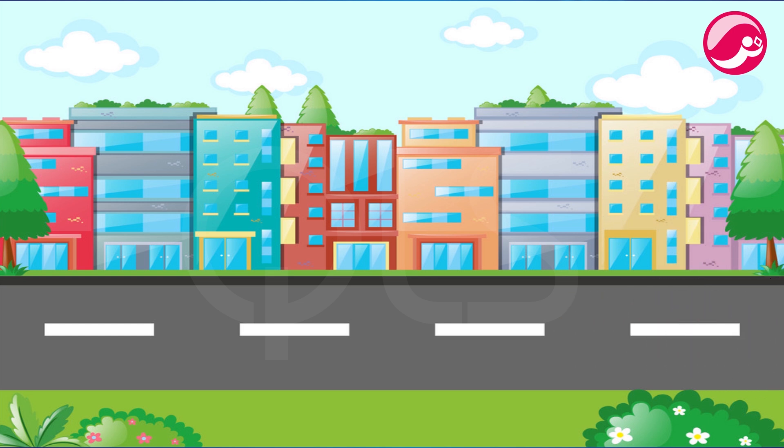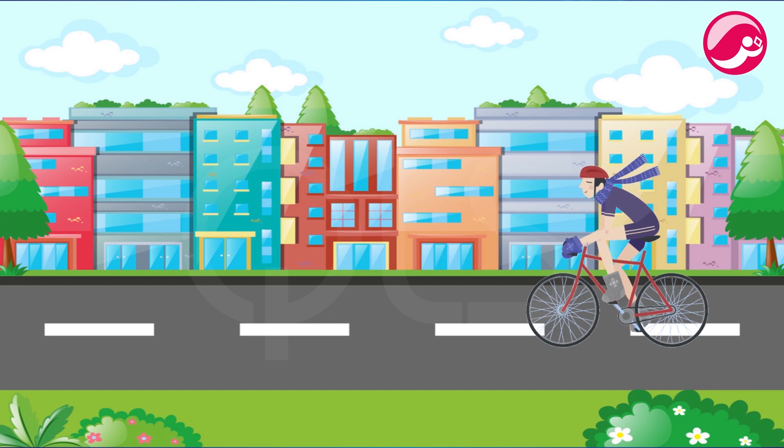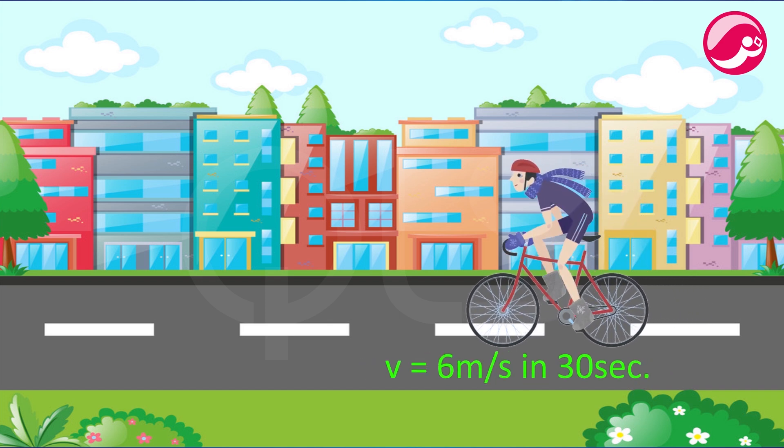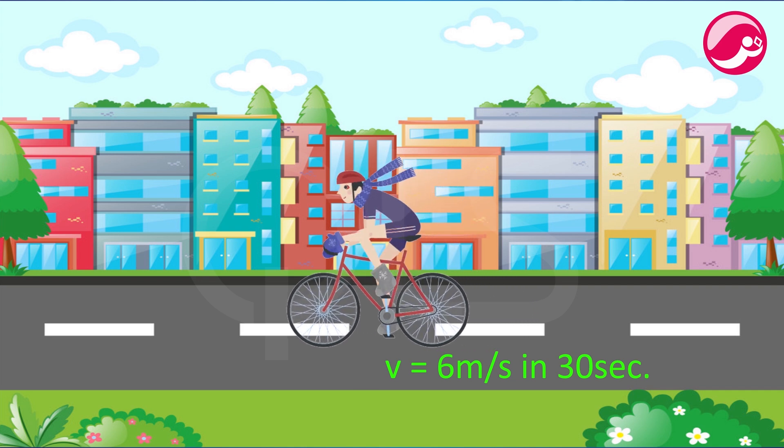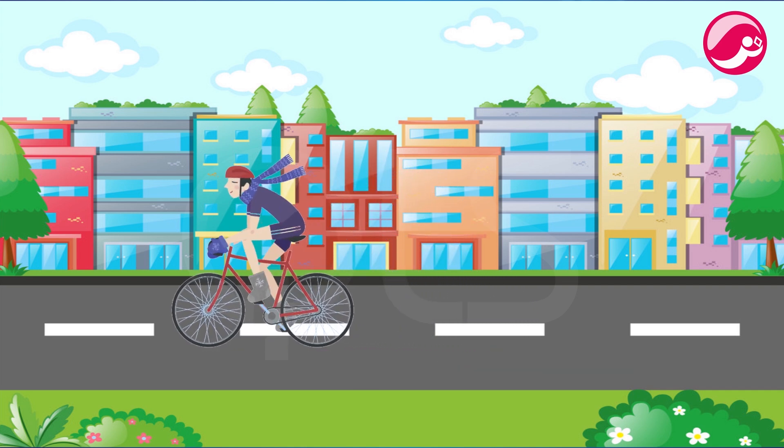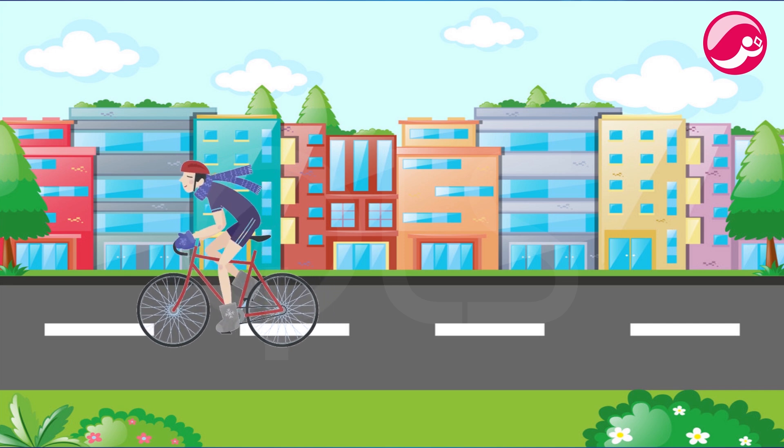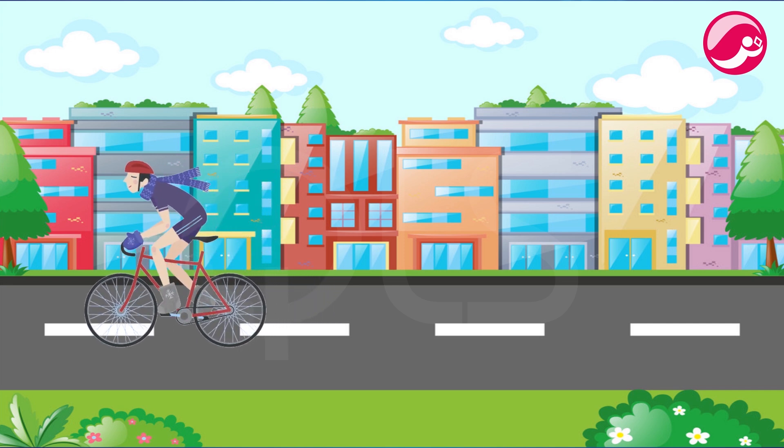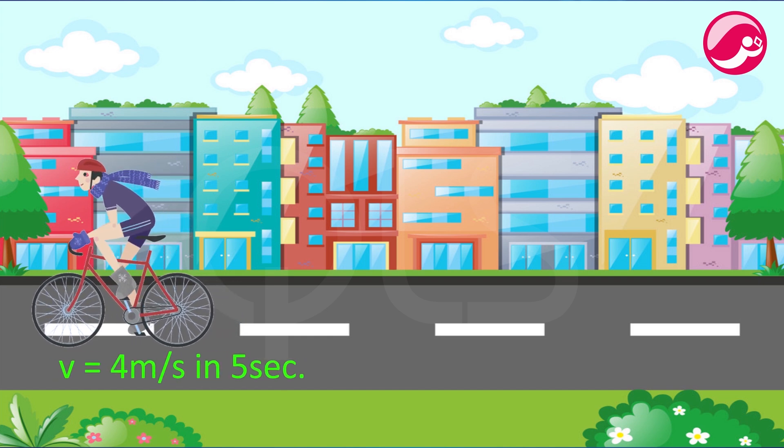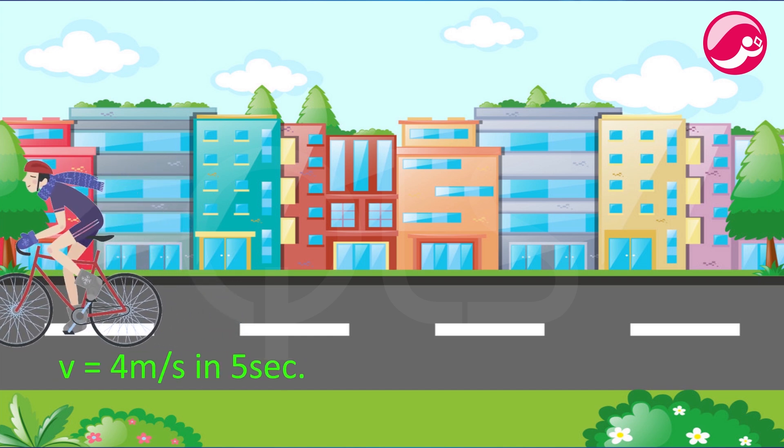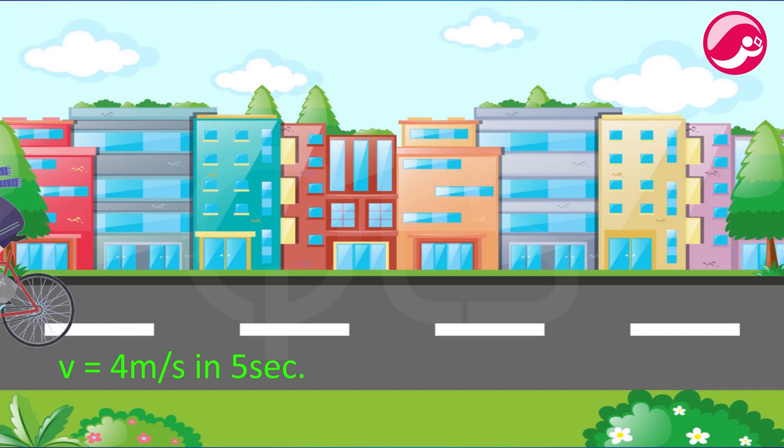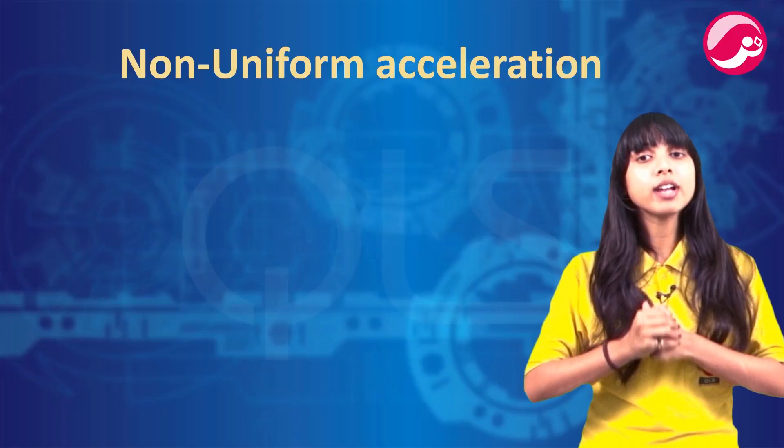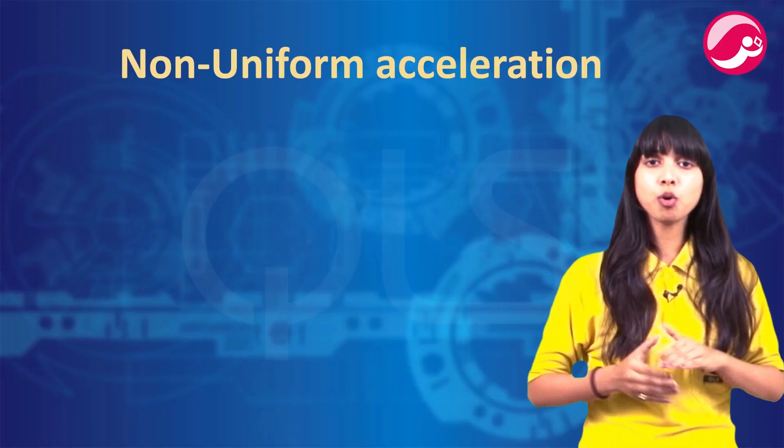Now let's see another example. Starting from a stationary position, Rahul paddled his bicycle to attain a velocity of 6 meter per second in 30 seconds. Then he applies brakes such that the velocity of the bicycle comes down to 4 meter per second in the next 5 seconds. Now calculate the acceleration of the bicycle in both the cases.